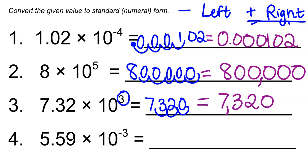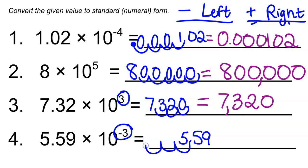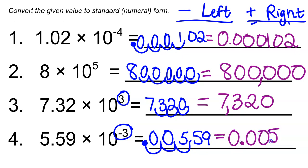Last but not least: 5.59 times 10 to the negative 3rd. Our exponent is negative so we move to the left — one, two, three. Our decimal point is now here, and we fill in those blank spaces with zeros, giving us 0.00559. And that is our last problem.